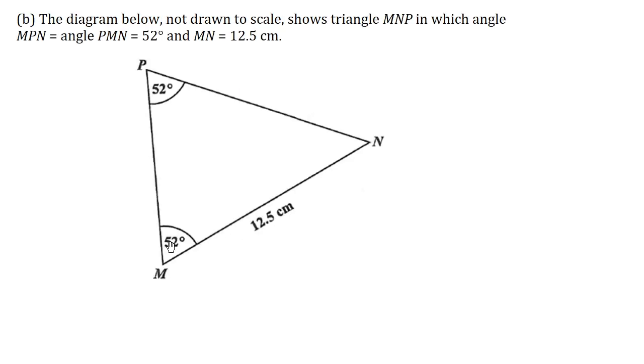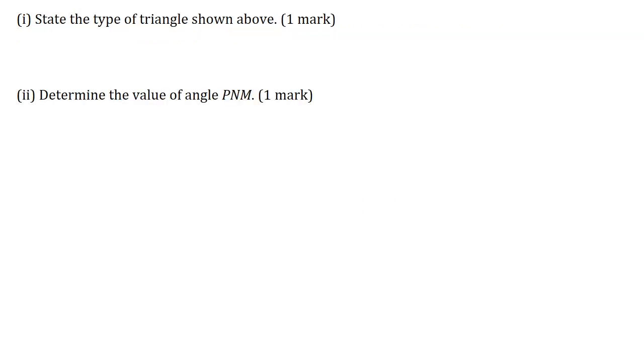You would notice here that these two angles are the same. In an isosceles triangle, the base angles are equal. So this is an isosceles triangle.